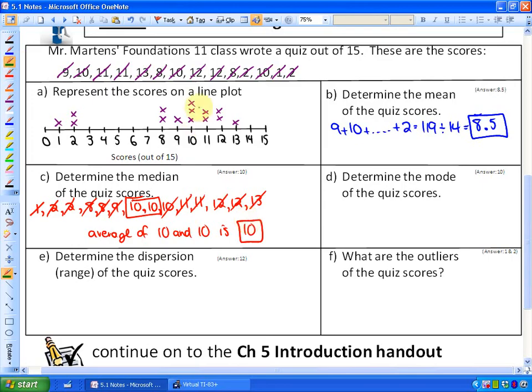The mode is very easy to see from the line plot. 10 is the score that occurs the most. If there were multiple scores that each happen the most, they would all be the mode—like if 3 students got 10 and 3 got 11, both would be the mode. The range is always the highest score minus the lowest score, so 13 minus 1. The range is 12.